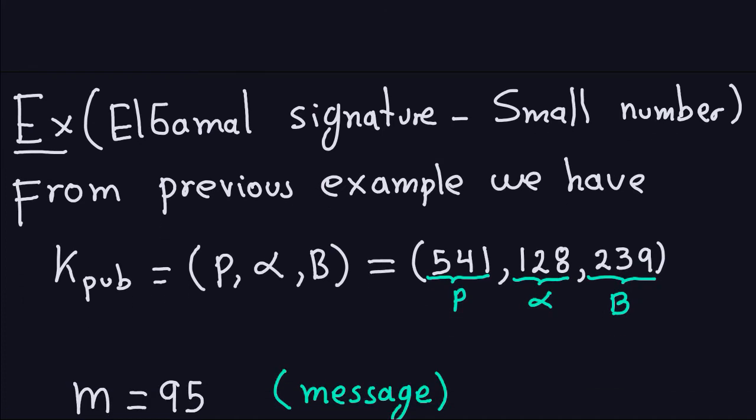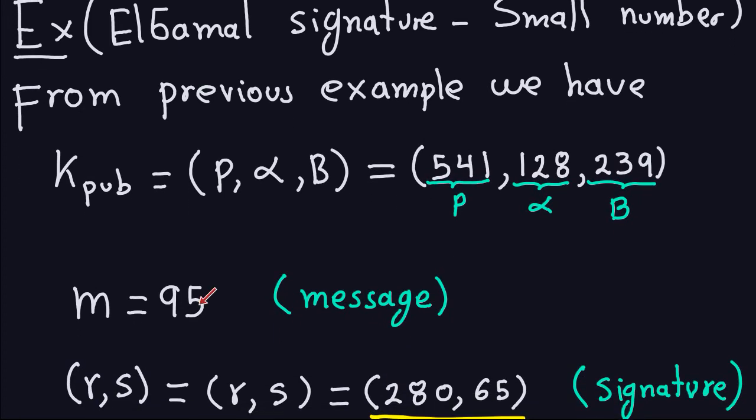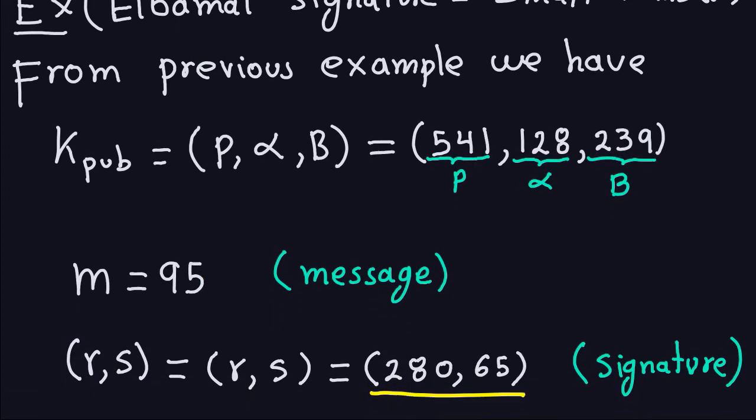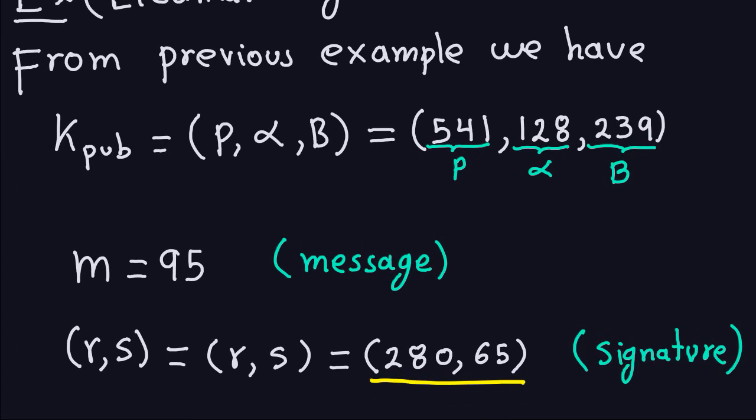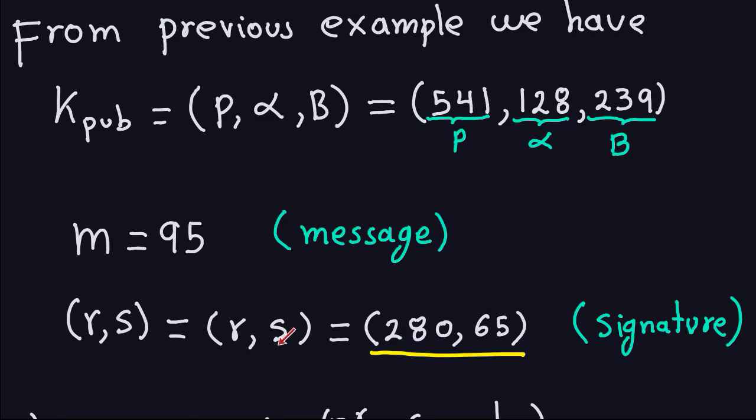If you recall that the public key is P, alpha, and B, in that example from video 1, P was 541, alpha was 128, and B was 239. And the message that was sent was 95. And the signature that we got from the previous example was this pair of numbers RS, with R is 280, and S is 65. That is the signature.